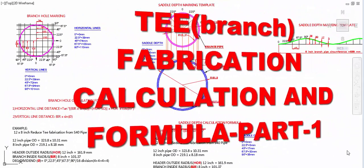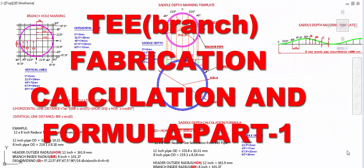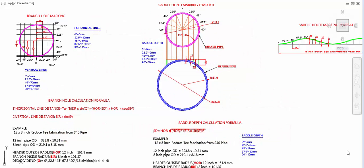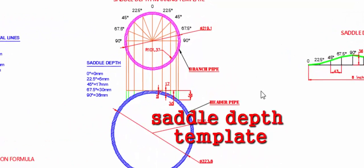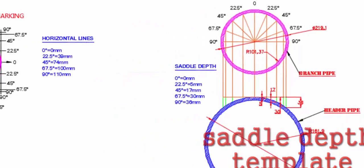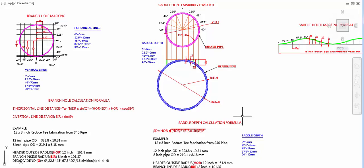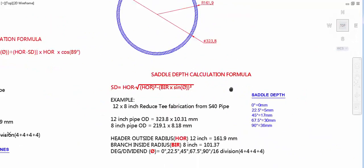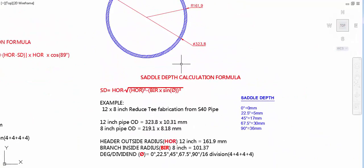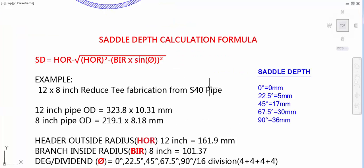Hi friends, this video explains T fabrication and saddle depth branch hole marking methods and formulas. In T fabrication, we have two parts: one is saddle depth marking and another one is branch hole marking. First, we will go to saddle depth and how to calculate saddle depth.